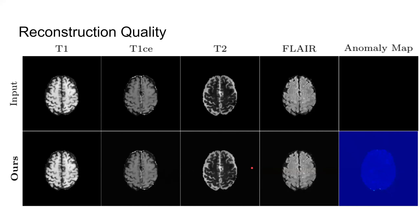Eventually we output the result and subtract the original image from the output to produce the anomaly map.